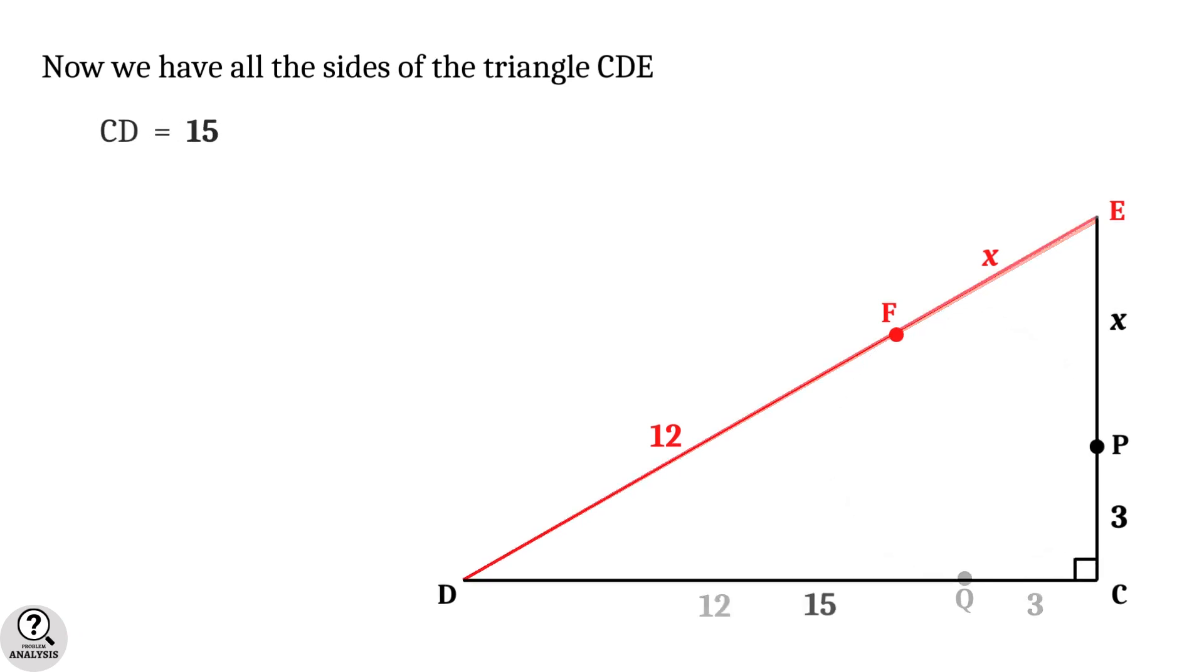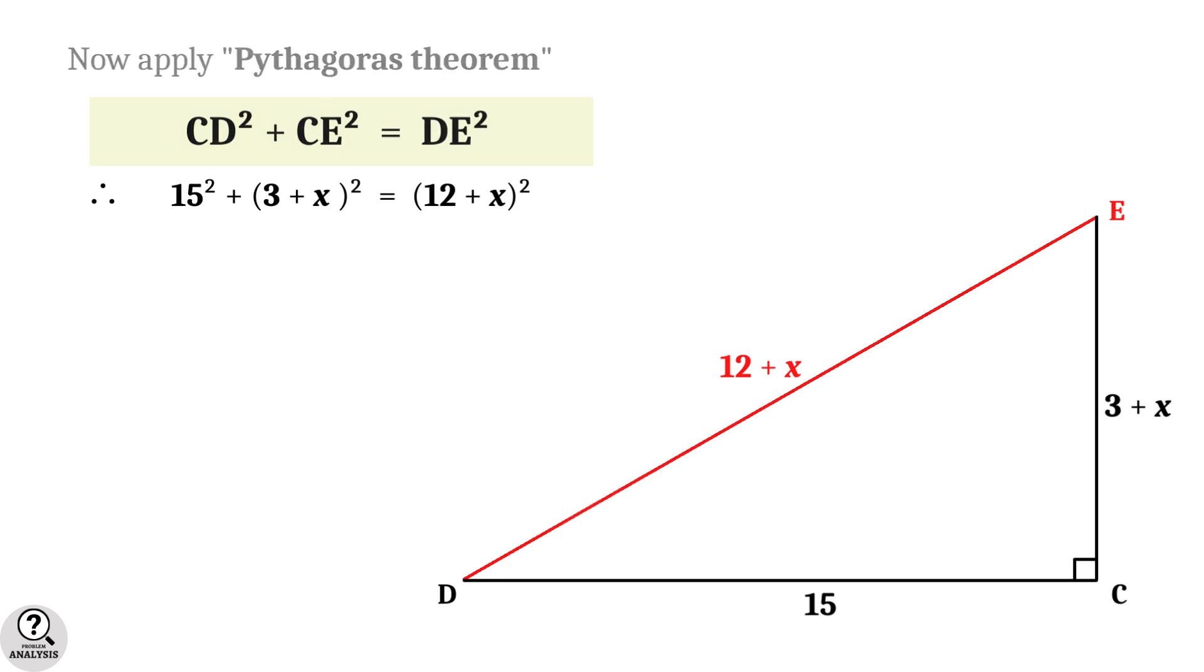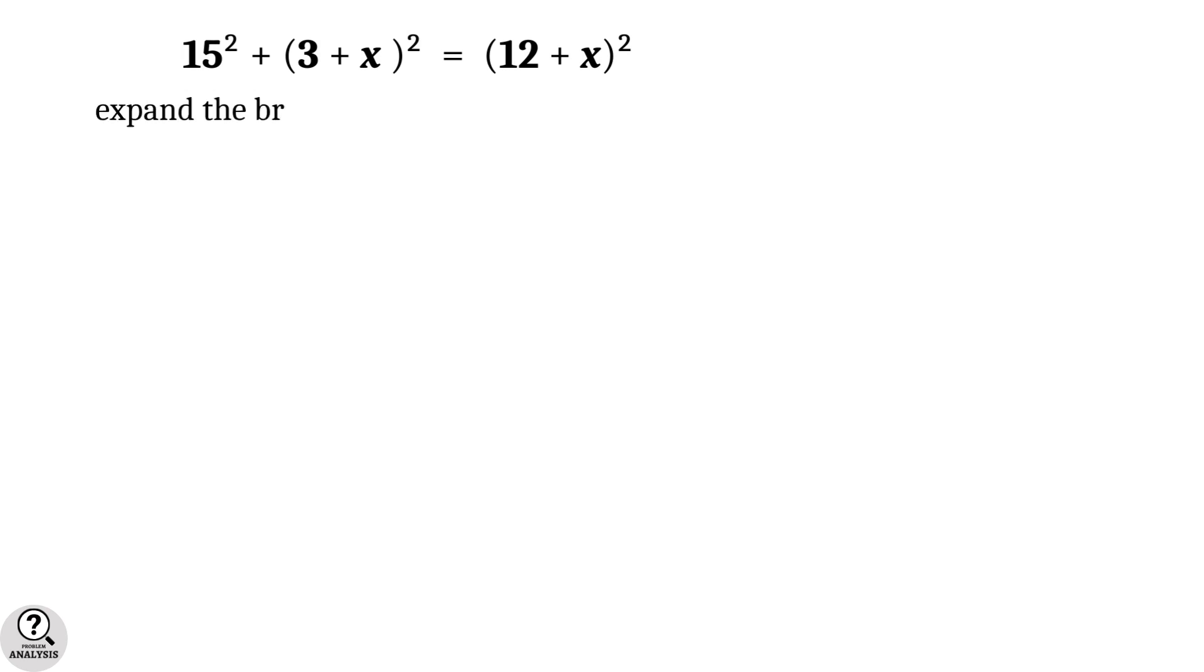Now we have all the sides of the right triangle. The side CD equal to 15, the side CE equal to 3 plus X, and the side DE equal to 12 plus X. By applying Pythagoras theorem we get CD square plus CE square equal to DE square. That means 15 square plus 3 plus X whole square equal to 12 plus X whole square.